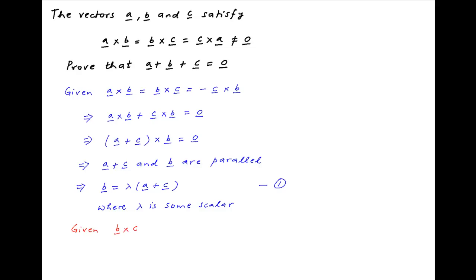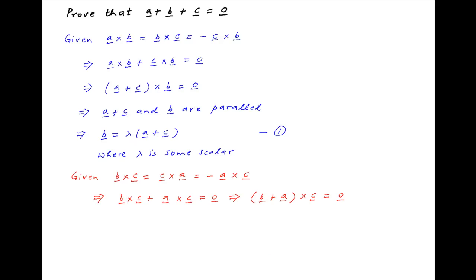We are also given that vector b cross c is equal to vector c cross a, which can be written as minus vector a cross c. This means that vector b cross c plus vector a cross c equals the null vector, which can also be written as vector b plus vector a in brackets cross vector c equals the null vector. Substituting the value of vector b obtained in result 1, this means that lambda times vector a plus vector c, plus vector a, in brackets cross vector c equals the null vector.